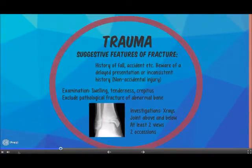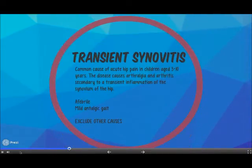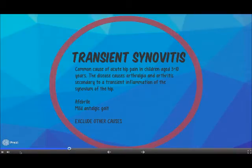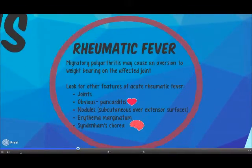Trauma is suspected based on history and x-rays. However, a lack of significant history could point to a non-accidental injury or a pathological fracture. Transient synovitis is a diagnosis of exclusion. Rheumatic fever may present with a migrating polyarthritis and other features of the Jones criteria should be looked for.